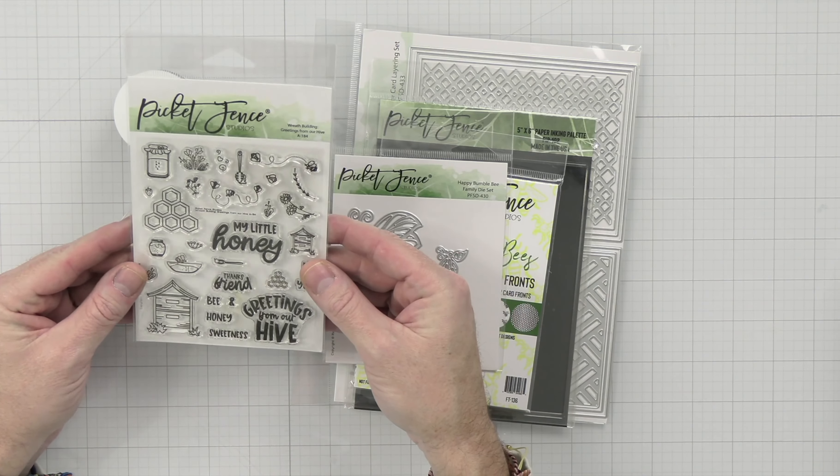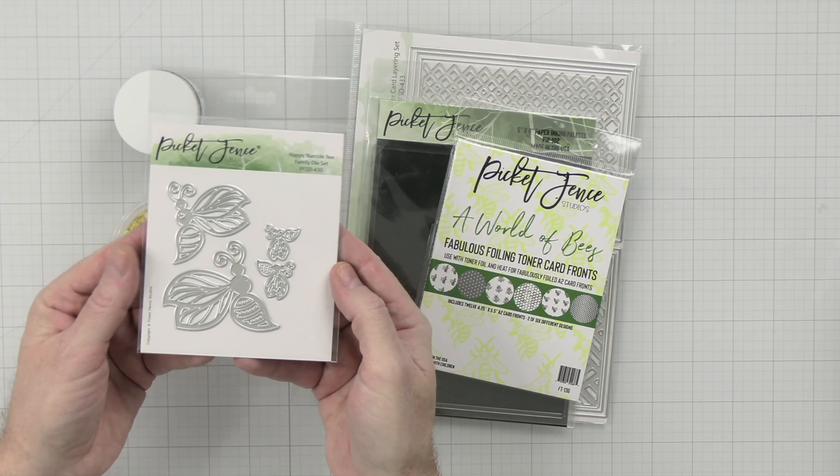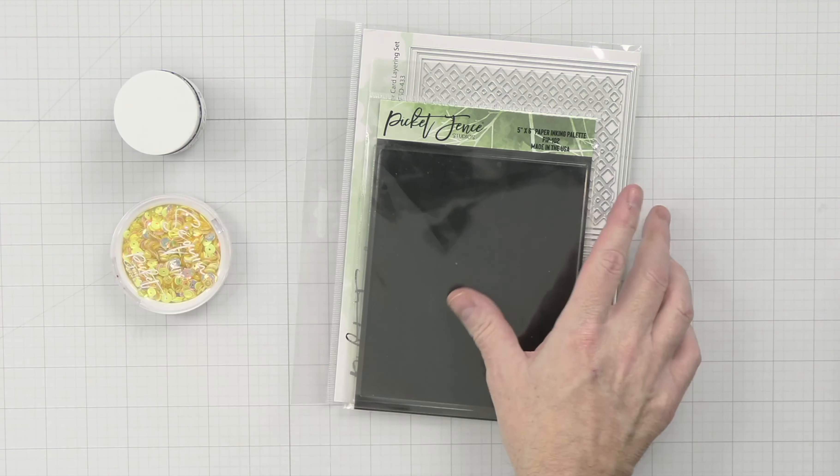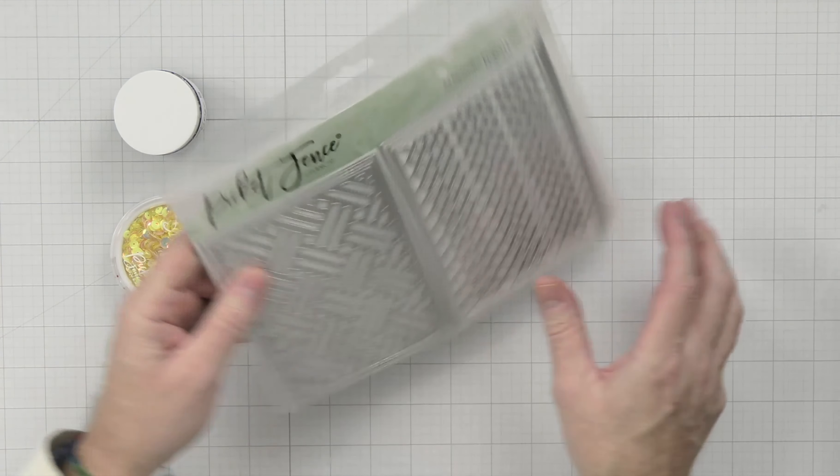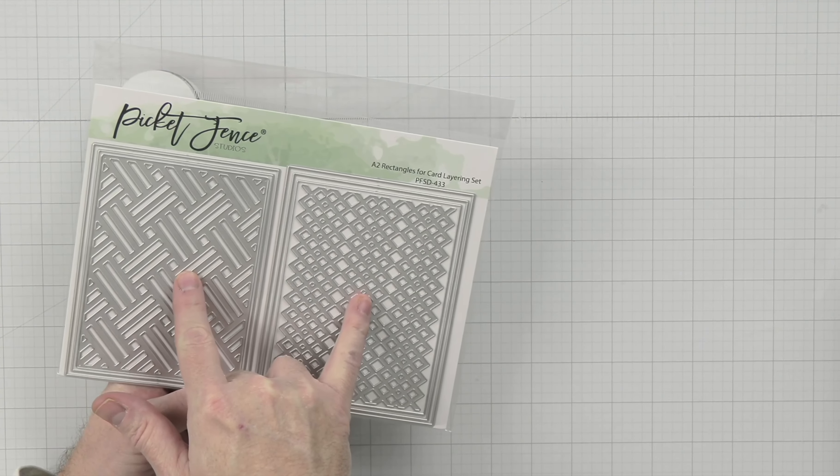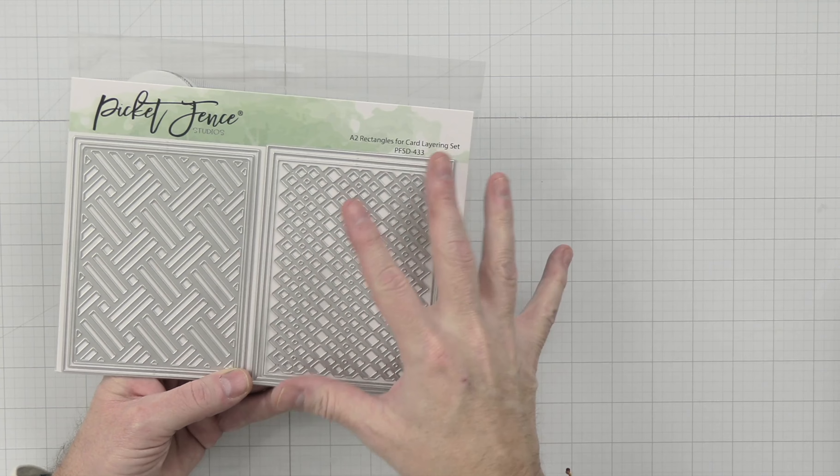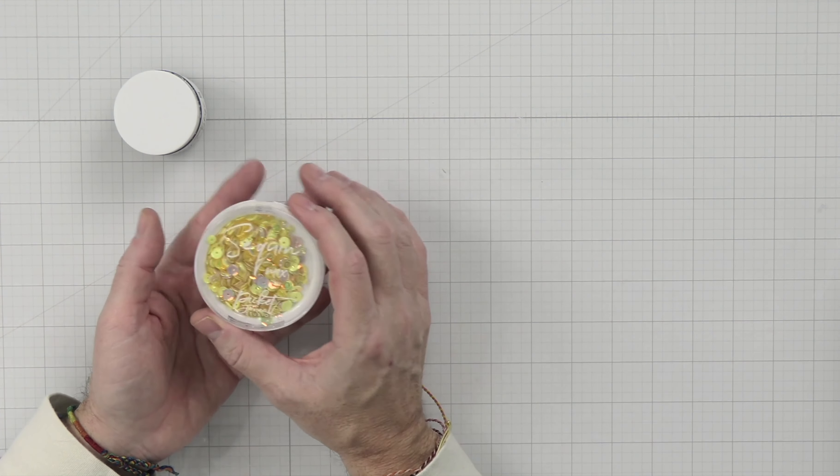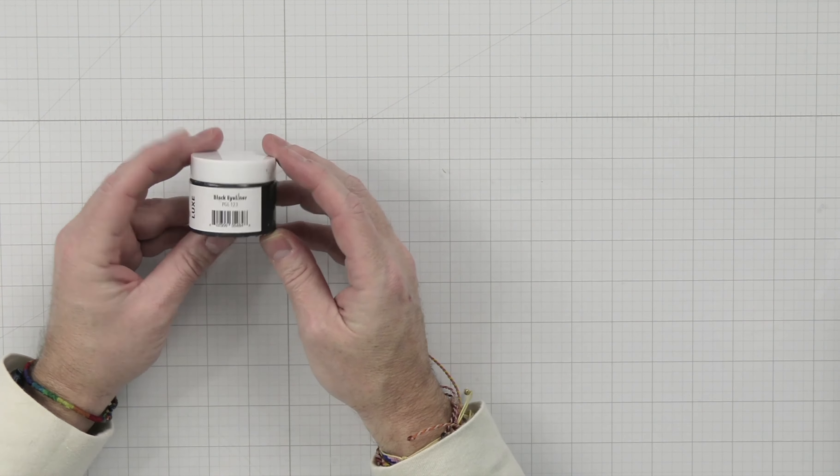We're going to be using the Wreath Building Greetings from Our Hive. We're also going to be using the Happy Bumblebee Family Die Set, the Fabulous Foiling Toner Cards, A World of Bees. We are going to be using the Paper Inking Palette as well. We're going to be using the A2 Rectangles Card Layering Set, which is really cool because it comes with these two inserts here that you can cut out, but it also comes with the rectangles to cut out different sizes of panels. Then we're going to use a sequin set called All About the Yellows, and we're going to be also using this new Paper Glaze Luxe called Black Eyeliner.